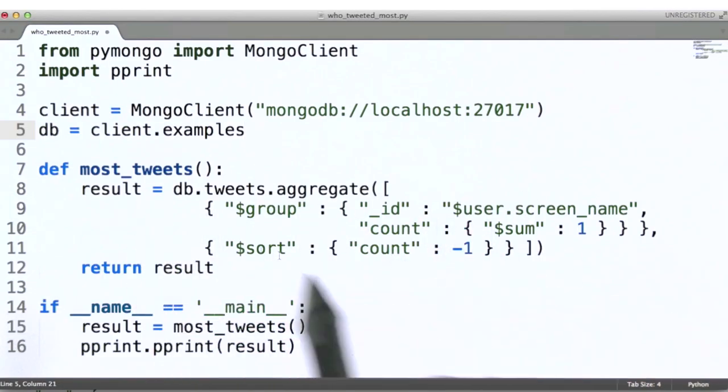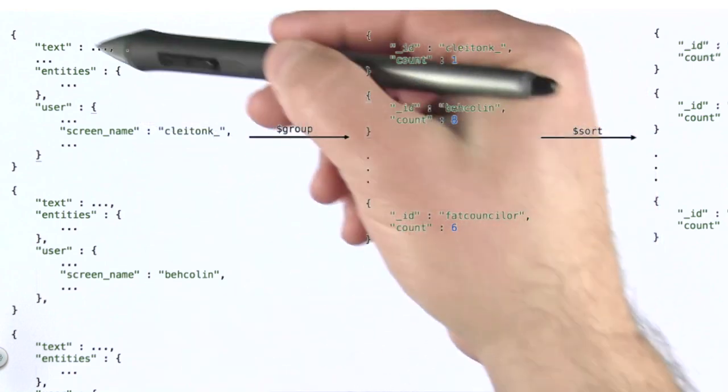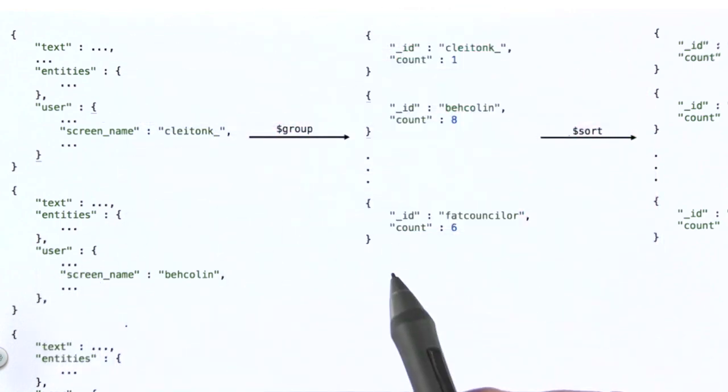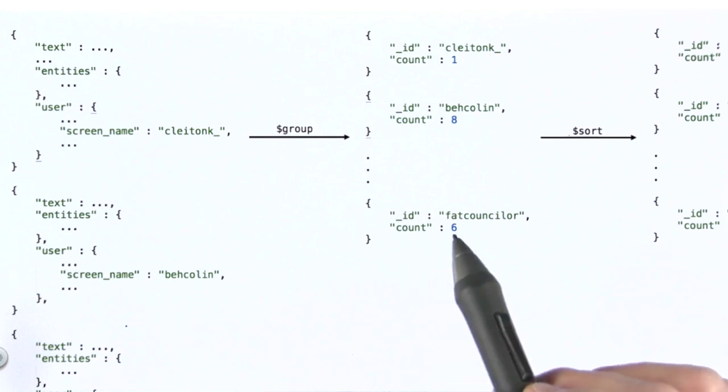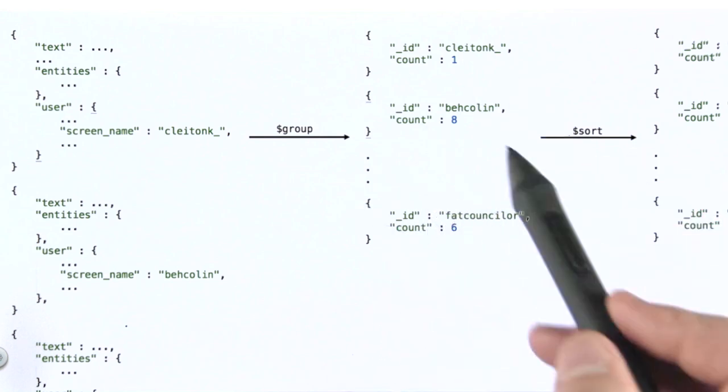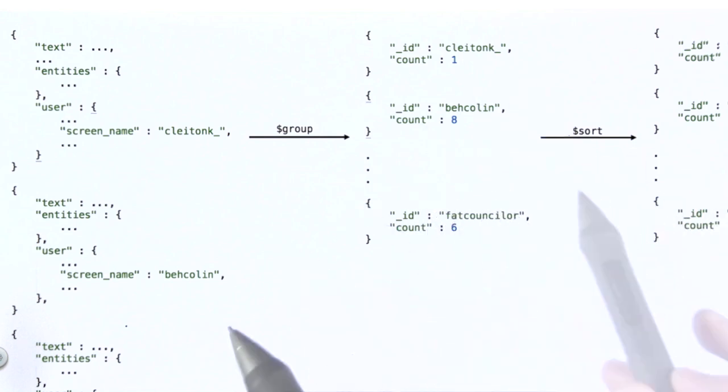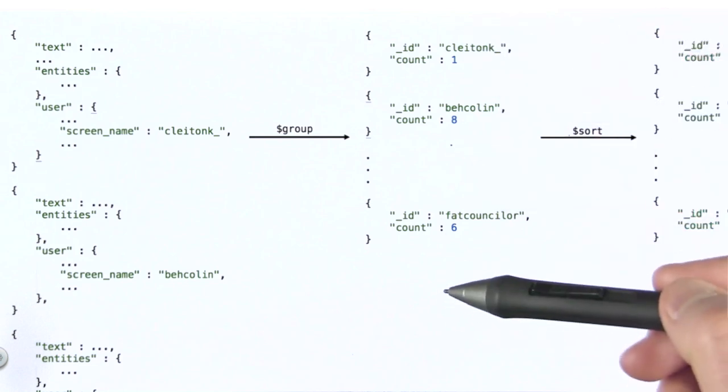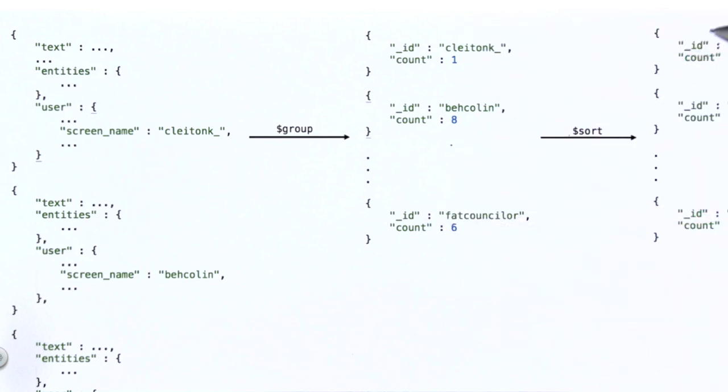Here is our aggregate query. In this column, we're representing the collection being fed into that first group stage, and then what the group stage passes on to the sort stage. This is the output of the group stage, and then finally the output of the sort stage.